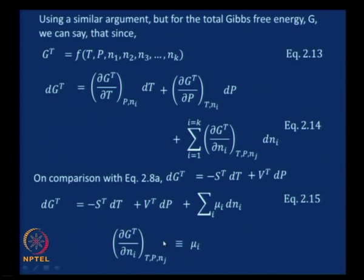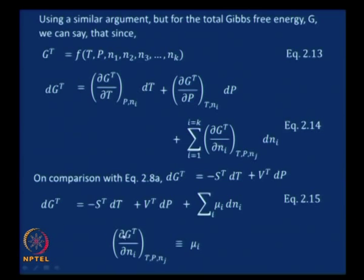Comparing equation 2.14 with equation 2.8A for a single component system (dGT equals minus ST dT plus VT dP), the multi-component case adds the extra term: summation of mu_i dNi, giving equation 2.15. We define (∂GT/∂Ni) at constant temperature, pressure, and Nj as mu_i itself. One may ask: earlier mu_i was defined via ∂UT/∂Ni, and now via ∂GT/∂Ni—how can both be the same? Let us show that these two quantities are actually equal.